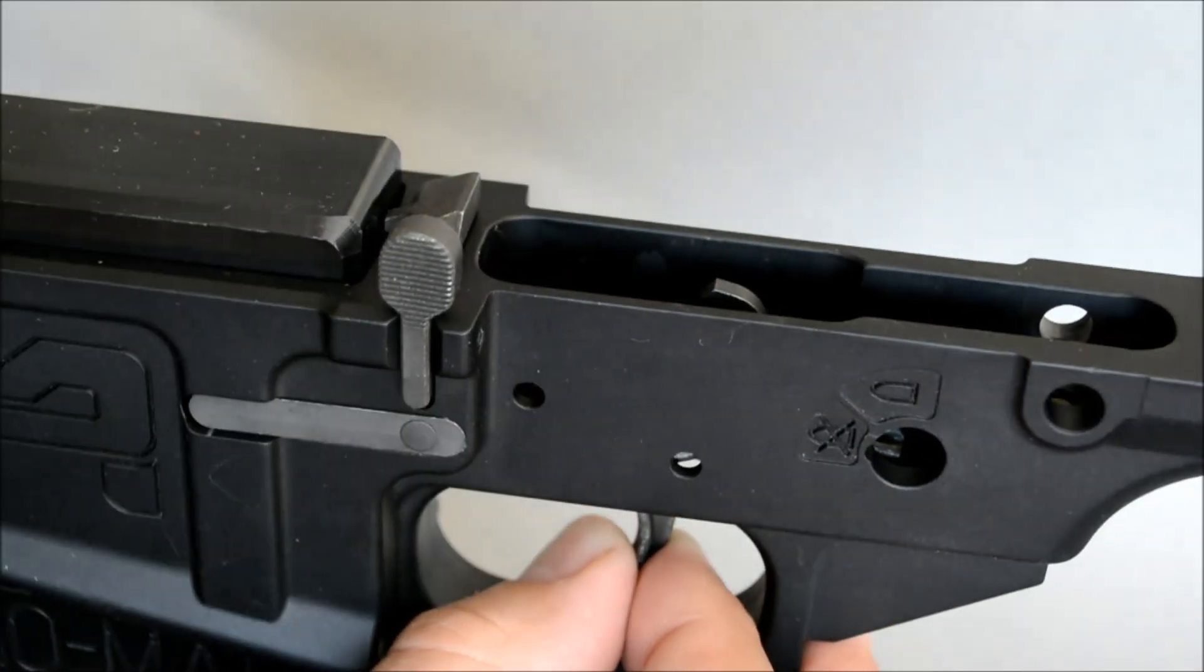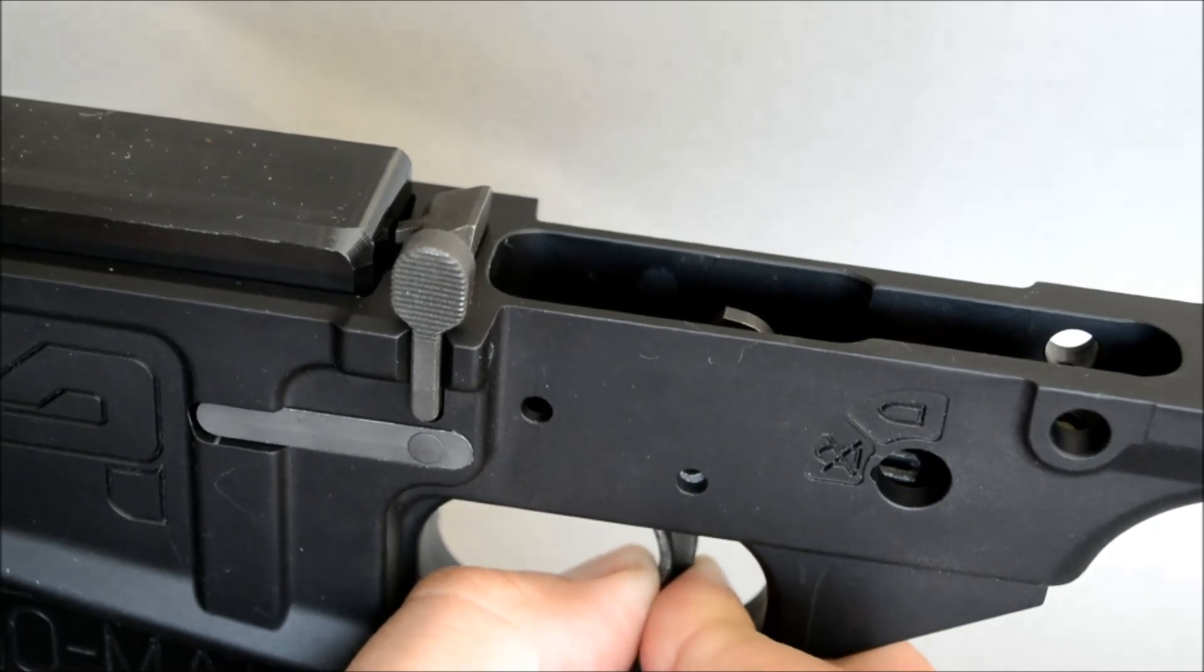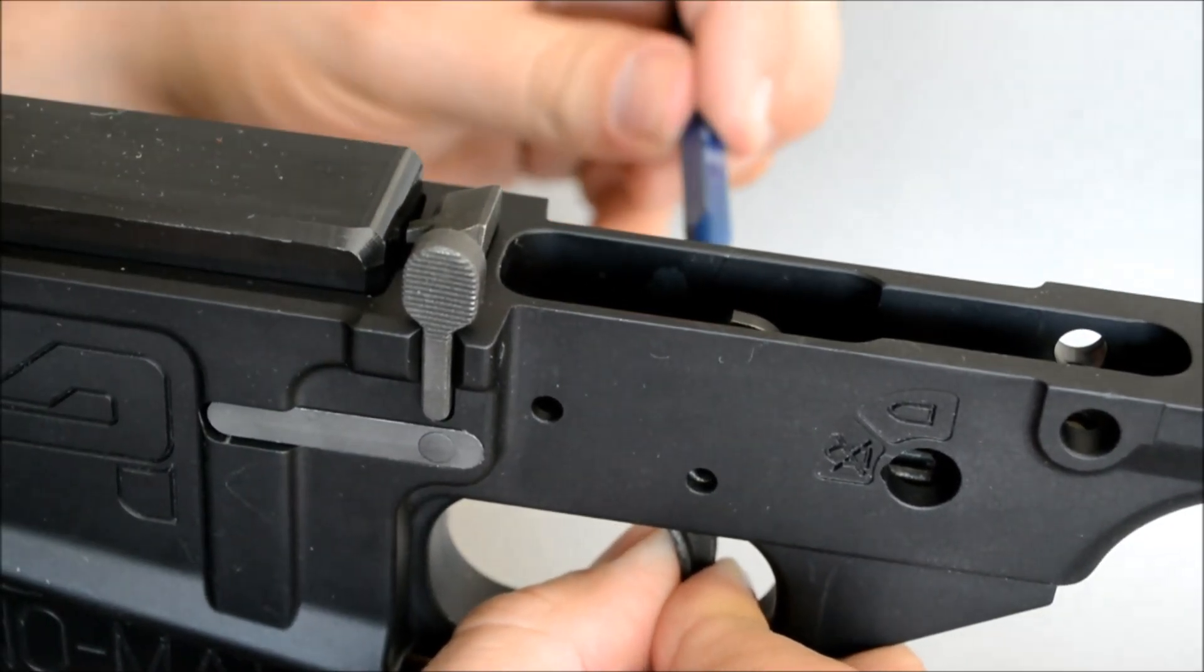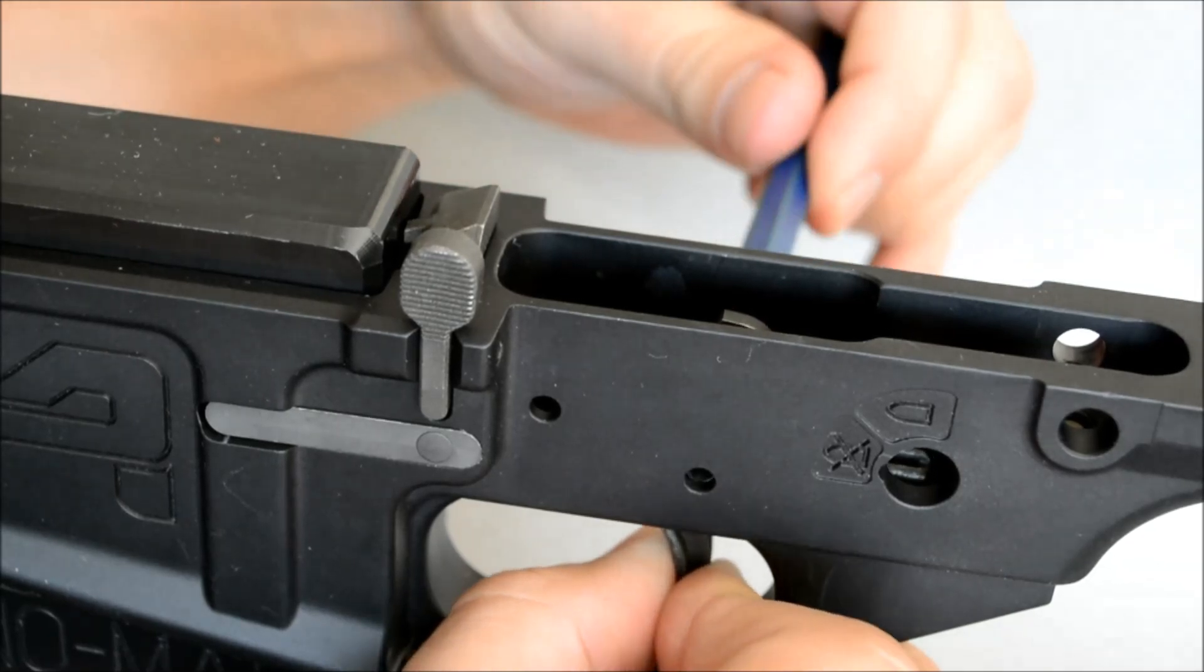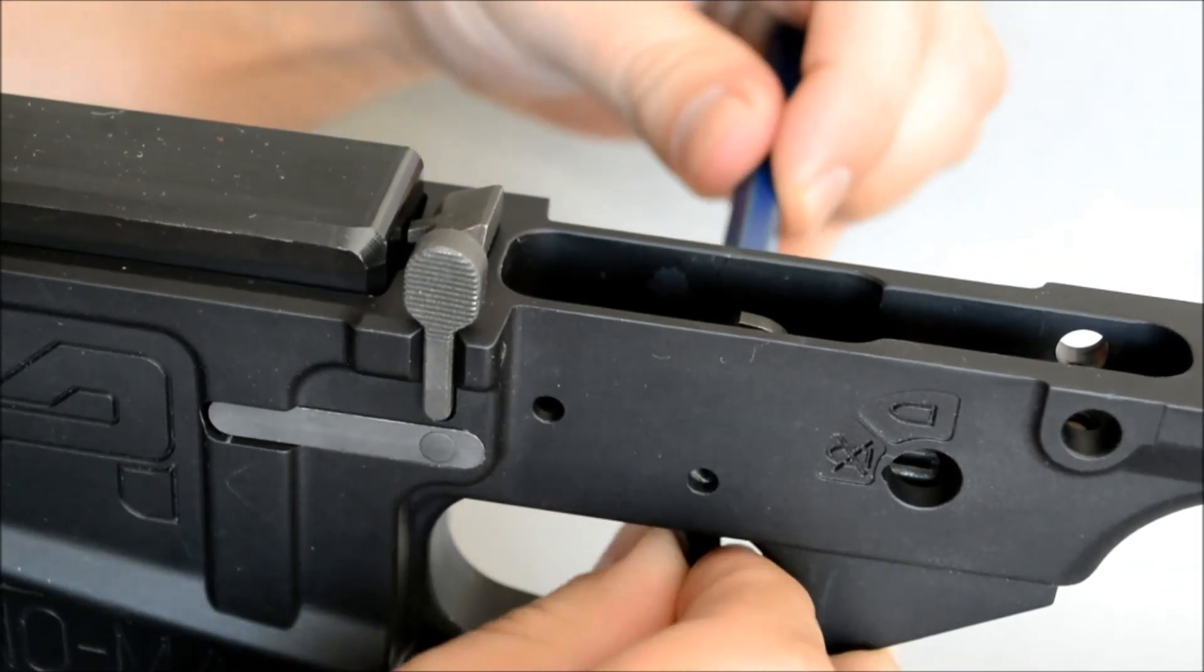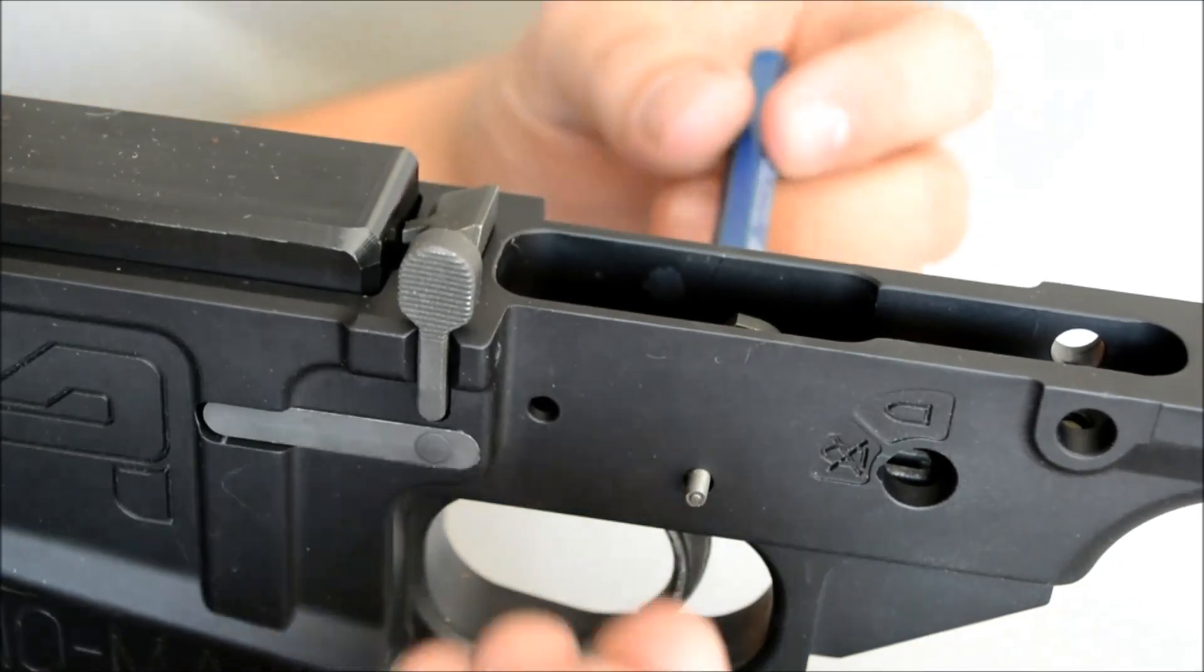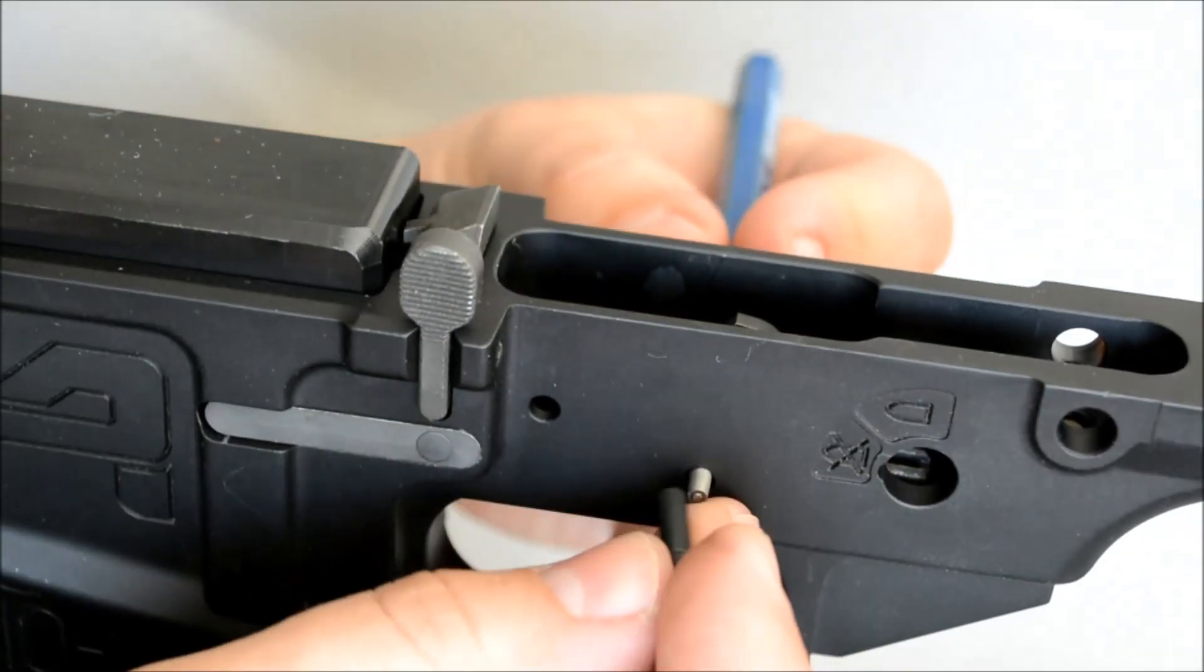Then line it up with this hole here. And to help it kind of keep into place just put a punch in there just to kind of line everything up and keep it into place. And then you can take your trigger pin and put that on in.